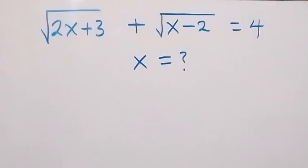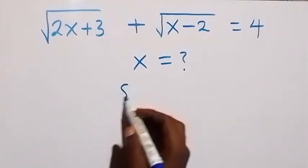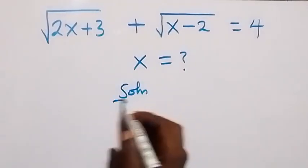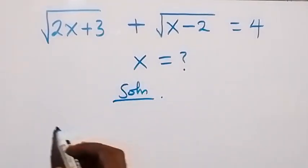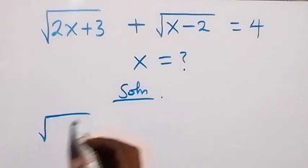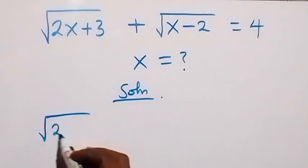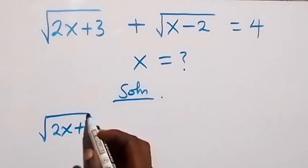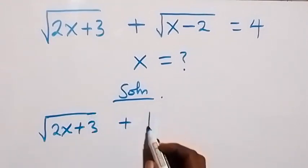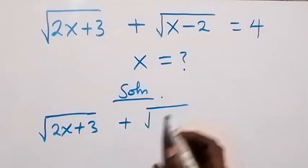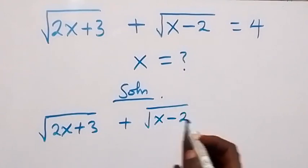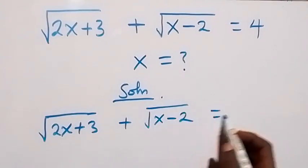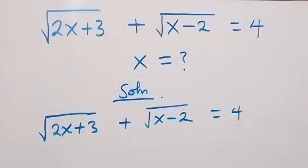Hello, you are welcome. How to solve for x in this nice square root problem? Here is the solution from what is given, which is: square root of 2x plus 3, plus square root of x minus 2, equals 4.